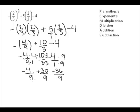Now that we have the same denominator, we can go ahead and add or subtract numerators. So let's start with the first two fractions. So negative four plus thirty is twenty-six over nine minus thirty-six over nine.